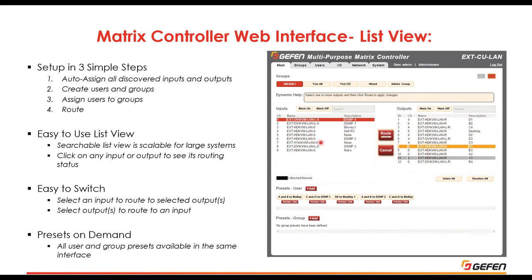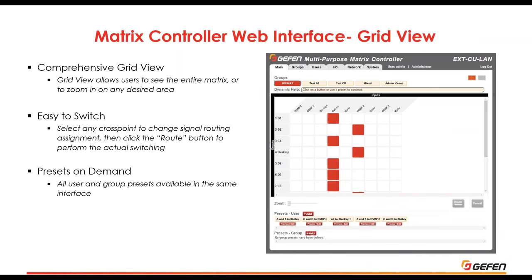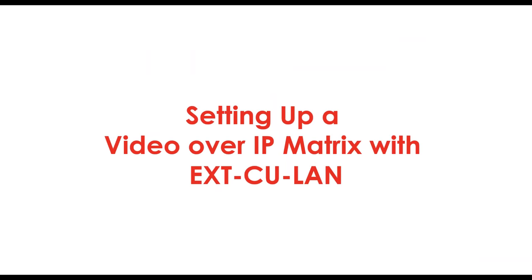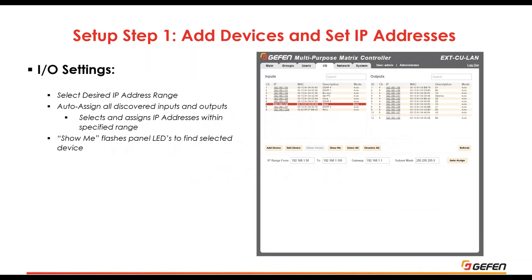The web GUI allows you to select any source, select the destination, and route at the push of a button. It also supports presets — click a preset to immediately change a large number of routing assignments. In addition to the matrix view, there's also a list view and a scalable grid view that lets you simply select a location and initiate the matrix change. It's actually simpler than most conventional matrices.